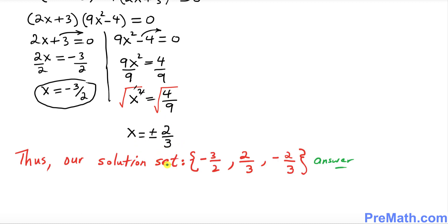Thus our solution set turns out to be -3/2 from here, and then positive 2/3 and negative 2/3 right up here. That is our answer.